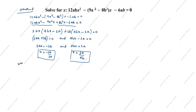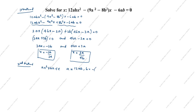Now we will see the second method using the quadratic formula. The standard form is ax² plus bx plus c equals 0. For our equation: a is 12ab, b is minus open bracket 9a² minus 8b² close bracket, and c is minus 6ab.